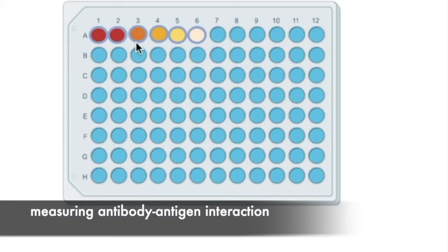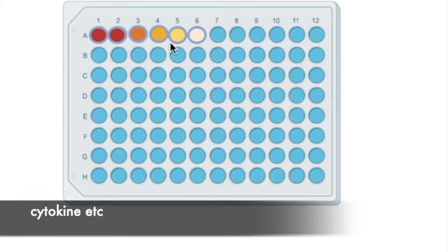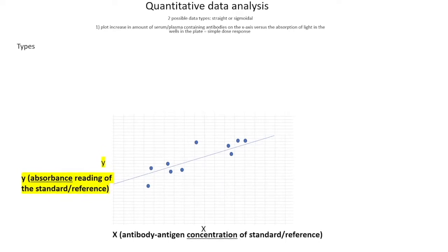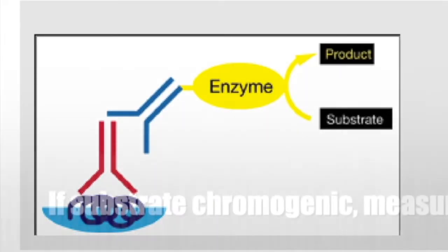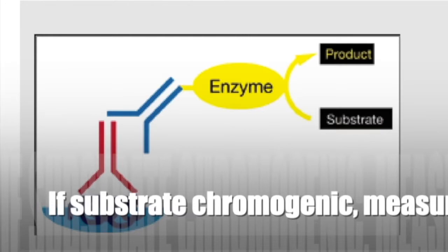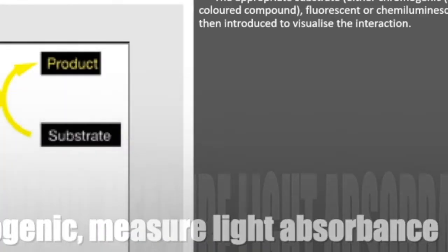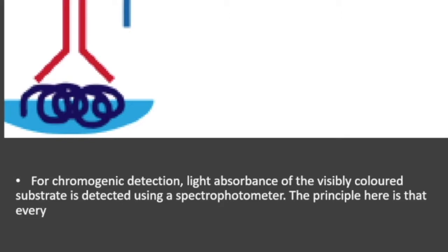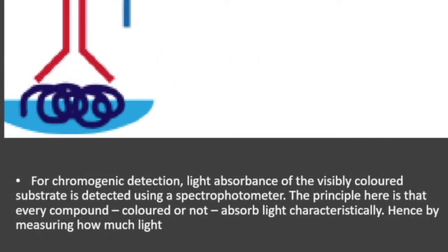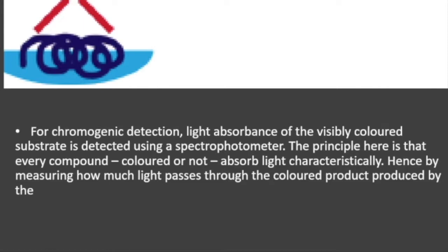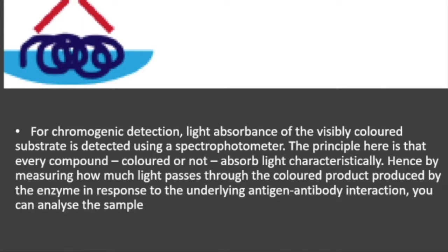In this video we're going to look at where you've detected an underlying antigen interaction, hormone interaction, or cytokine interaction in a biological system or experiment, and you want to determine what that response is using standard curves. A chromogenic detection system is introduced where light absorbance of a visibly colored substrate is used to detect the interaction using a spectrophotometer. The principle is that every compound absorbs light characteristically, so by measuring how much light passes through the colored product produced by the enzyme in response to the underlying antigen-antibody interaction, you can analyze the sample.